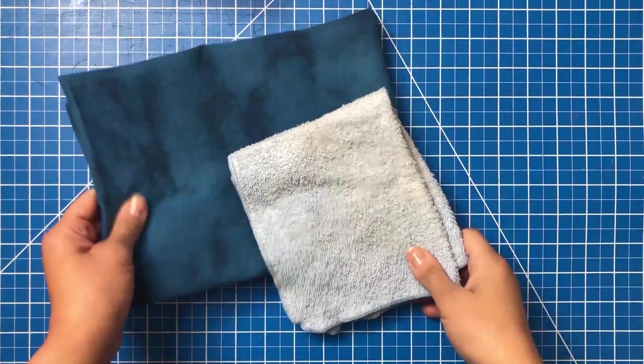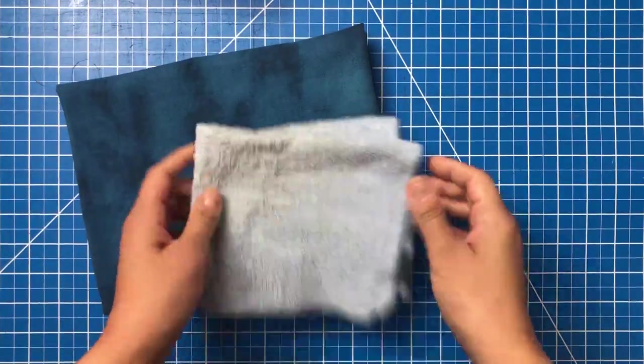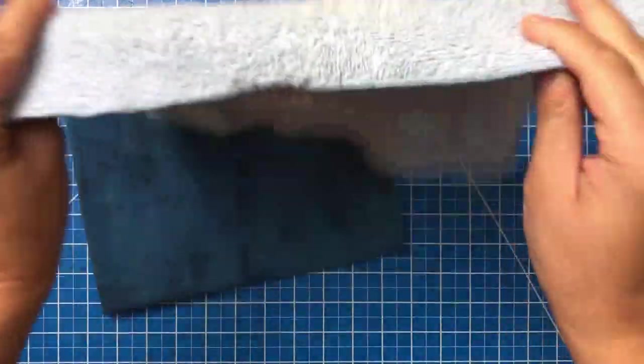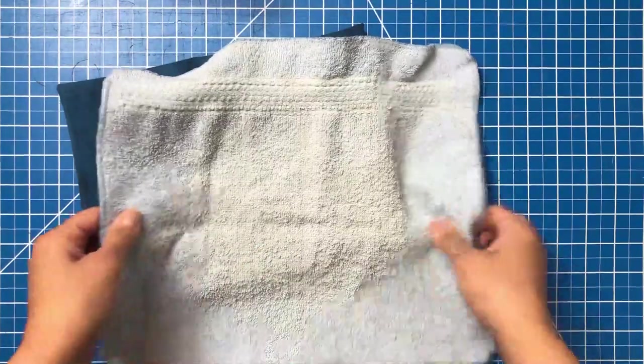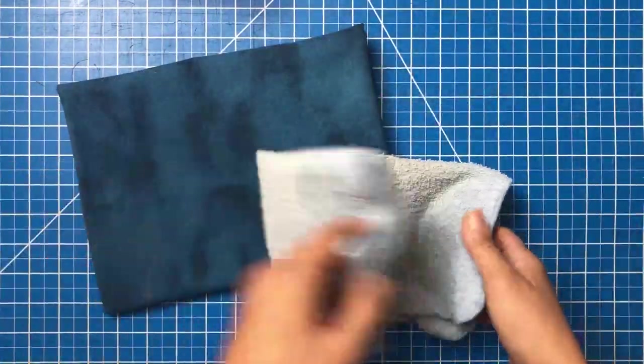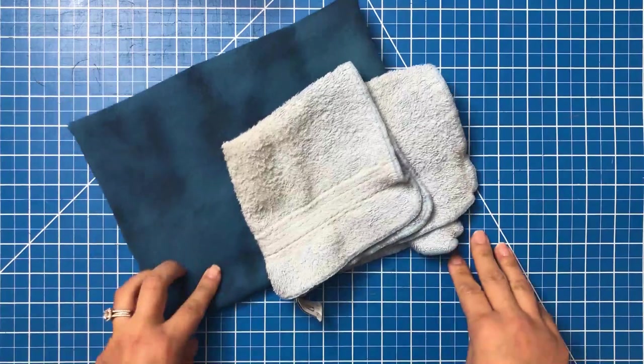Okay, so here I'm going to cut the quilting cotton for the top layer and then three layers of this terry cloth. The terry cloth will be for the middle two layers and then for the bottom layer as well. So cut them in four inch by six inch rectangles.